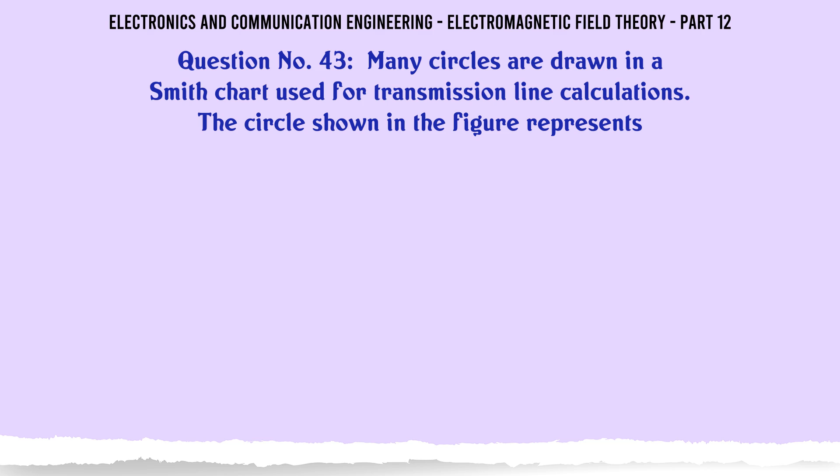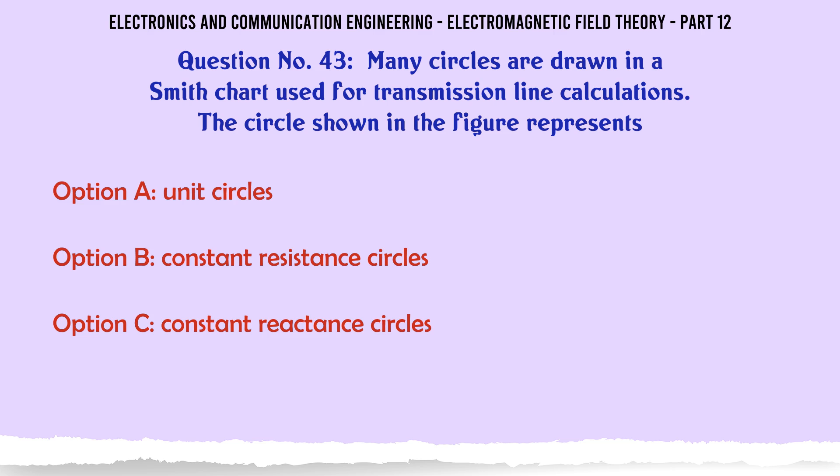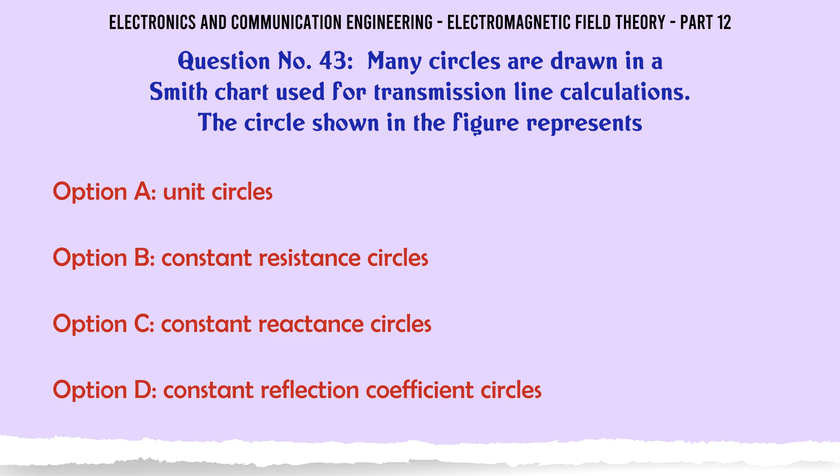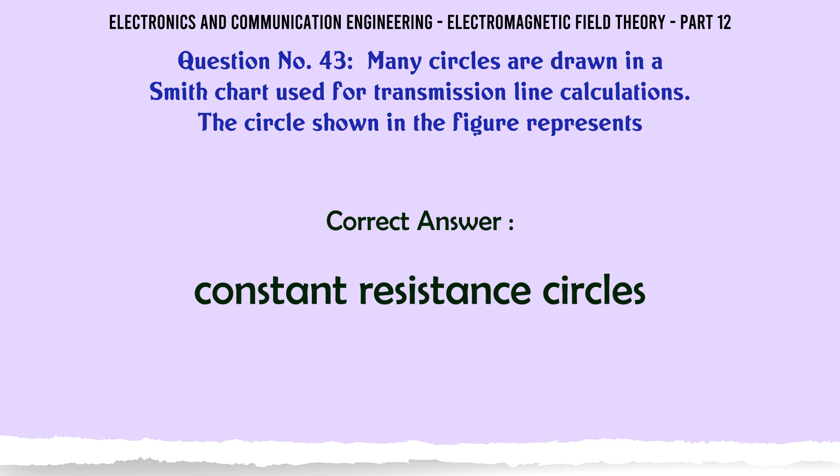Many circles are drawn in a Smith chart used for transmission line calculations. The circle shown in the figure represents: A. Unit circles, B. Constant resistance circles, C. Constant reactance circles, D. Constant reflection coefficient circles. The correct answer is Constant resistance circles.